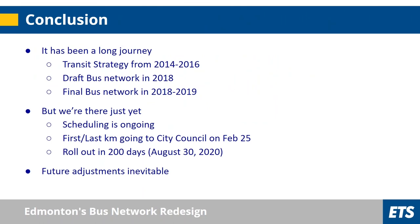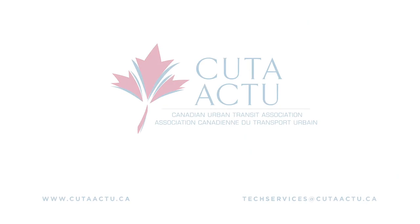In conclusion, it's been a long journey — we started the transit strategy in 2014, ran most of it in 2015 and 2016, did the draft bus network in 2018, and have been finalizing it since. We still haven't hammered out the final schedules, and the first-last kilometer project goes to city council on February 25th. We're about 200 days away from rollout, and we know day one won't be perfect — we'll need to make tweaks and adjustments. And this won't be the final form forever; there will likely be another hard look in 10 or 20 years. Happy to take any questions.